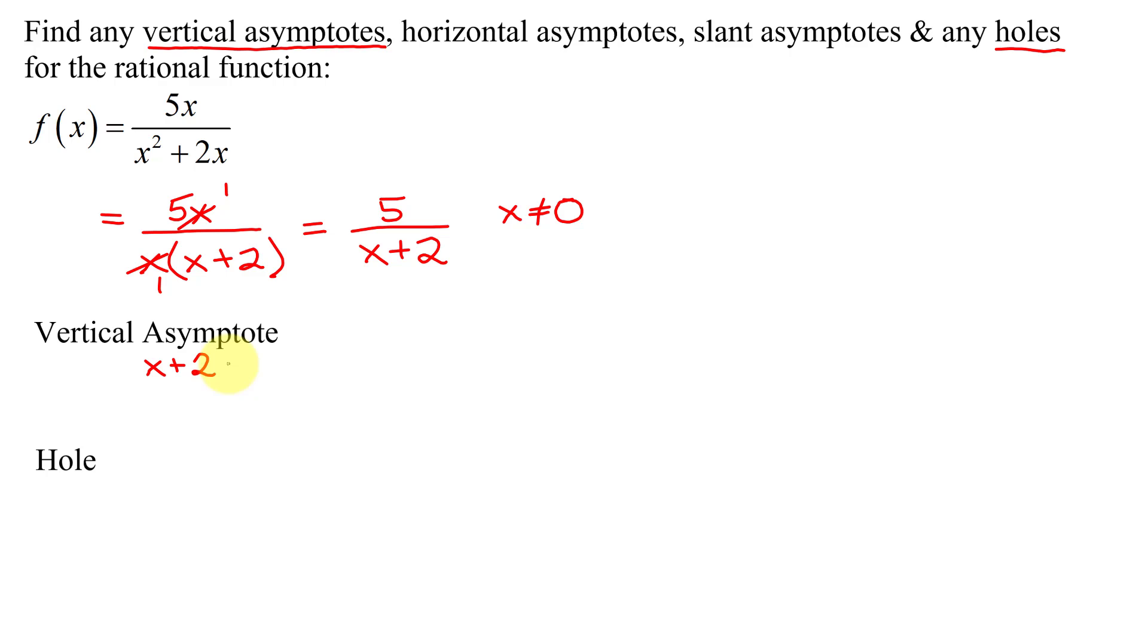So I have x + 2 = 0. Solving this for x, subtracting 2 from both sides, I get x = -2. So that is the equation of the vertical asymptote. Be careful, some students just say the vertical asymptote is -2. That is a number. We need the equation of a vertical line that always starts with x equals a number. In this case, that number is -2.